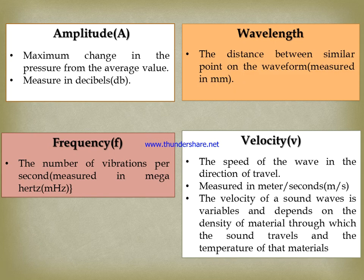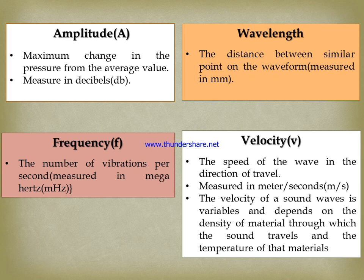Some basic terms in ultrasound: Amplitude is the maximum change in pressure from the average value, measured in decibels. Frequency is the number of vibrations per second, measured in megahertz. Wavelength is the distance between similar points on a waveform, measured in millimeters. Velocity is the speed of a wave in the direction of travel, measured in meters per second.